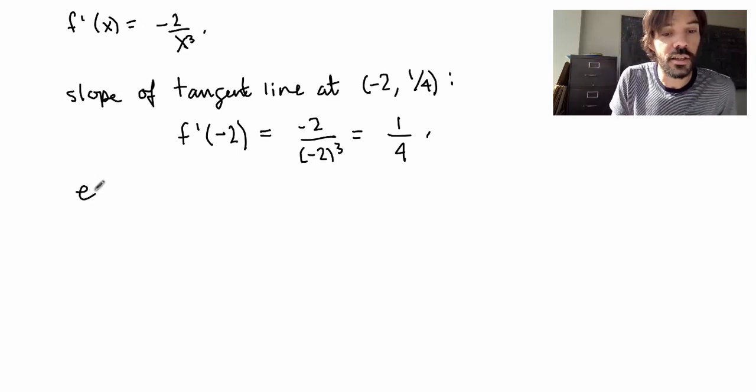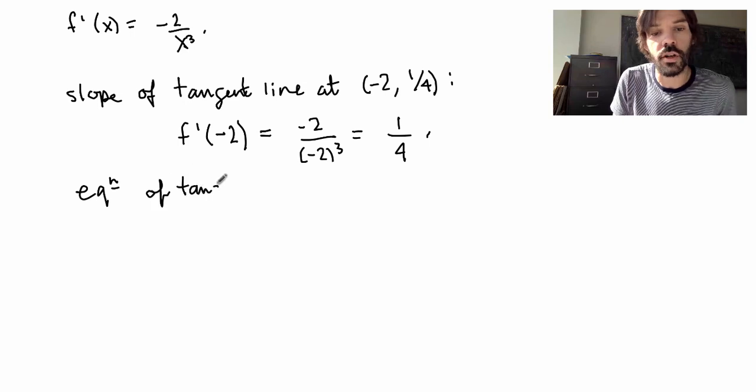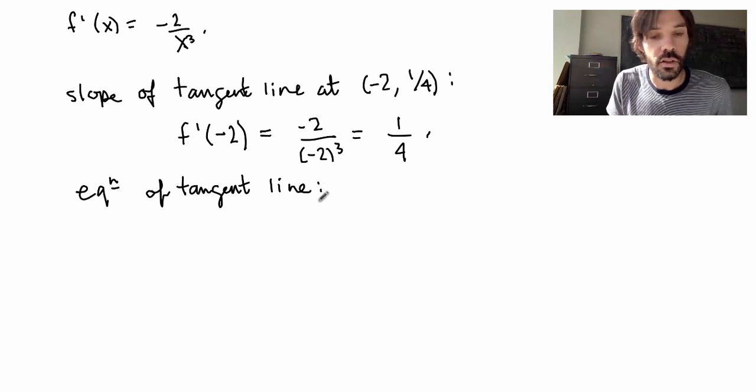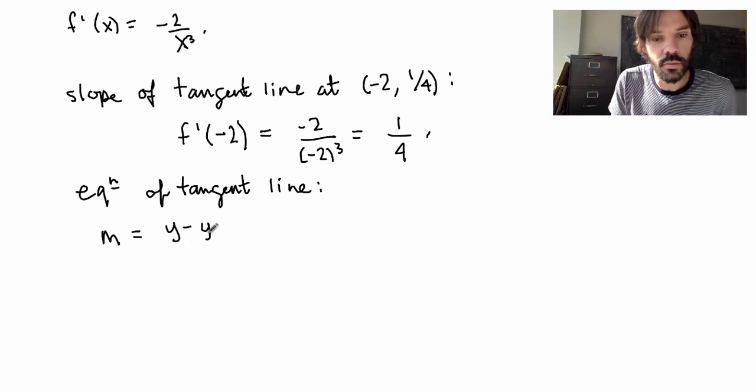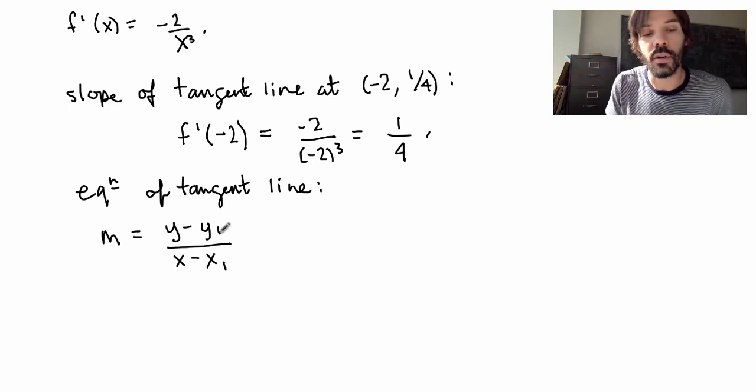But that's not over. Now I still need to find the equation of the tangent line at this point. So the easiest is to use what's called the slope formula. So remember that the slope of a line is given by the difference in the y coordinates of two points on the line over the difference in the x coordinates. So in other words, the equation of my line is given by this formula: m equals y minus y1 over x minus x1, where x1 and y1 are a given point on the line, and m is the slope of the line.